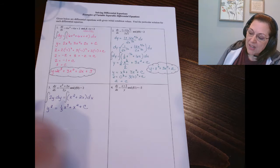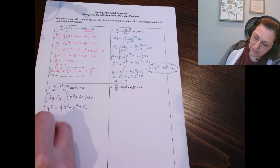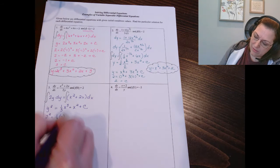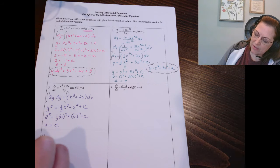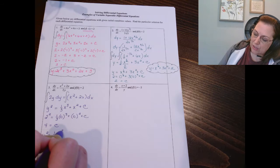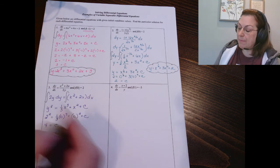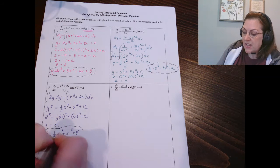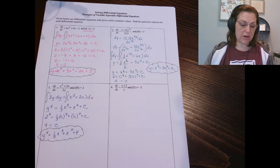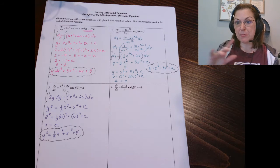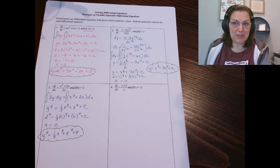You can choose which side you want to put it on. Now I'm going to use my initial point: when x is 0, y is 2. That gives me 4 equals c. So I've got y squared equals 1 third x cubed plus x squared plus 4. I'm not going to solve for y on this problem because if I do, I have to take the square root and consider a plus or minus. If I leave it as y squared, I don't have to worry about that. When we get into separable differential equations, we'll start to deal with things that aren't functions, so it's totally acceptable to leave it just as is.